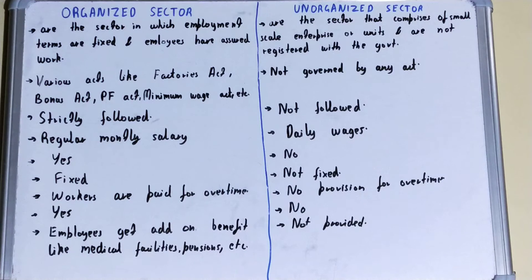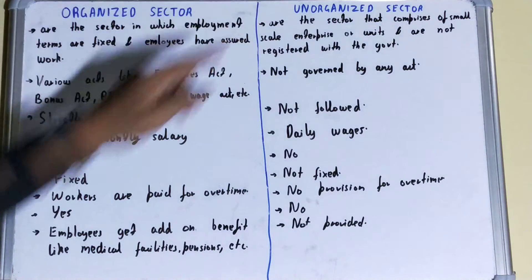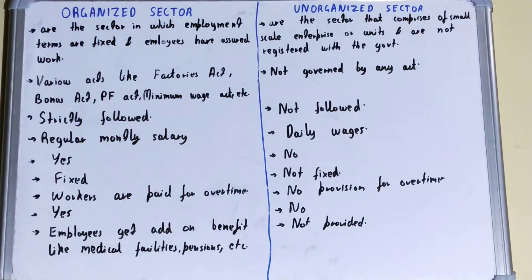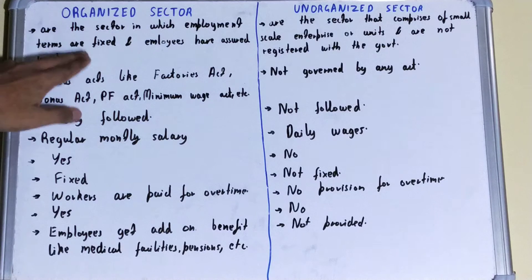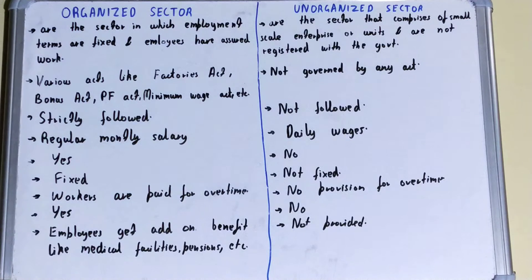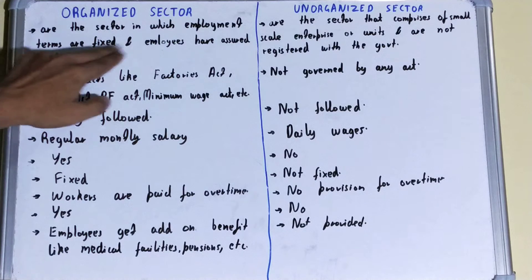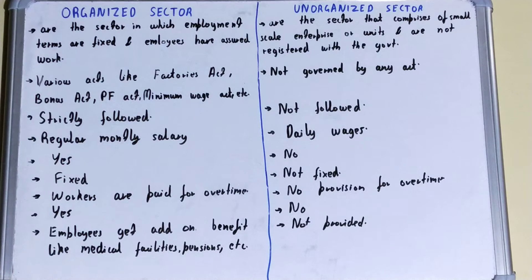Hello friends, in this video I'll be helping with the difference between organized sector and unorganized sector. So let's start. If we talk about the meaning, then the organized sector is the sector in which the employment terms are fixed and employers have assured work. The organized sector can be said as a sector which is well organized and well arranged.